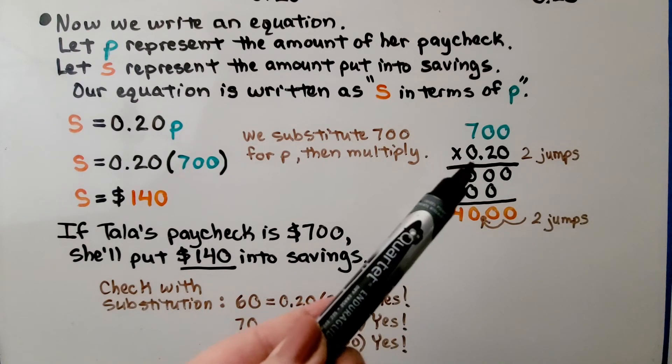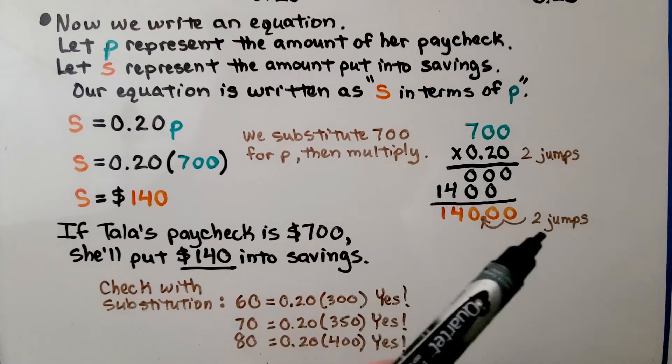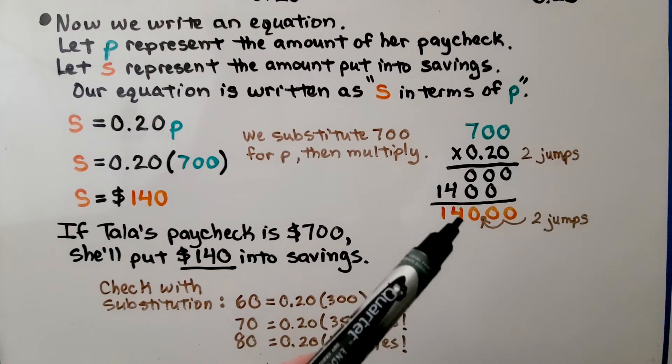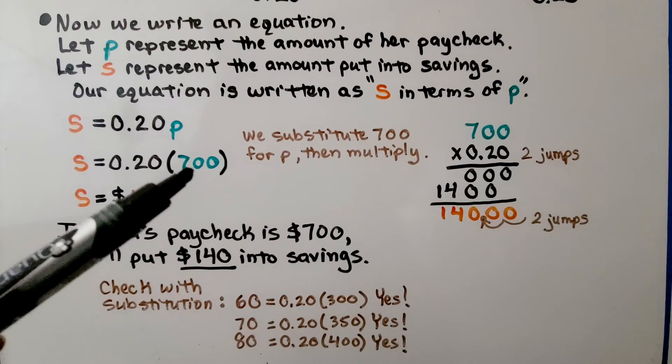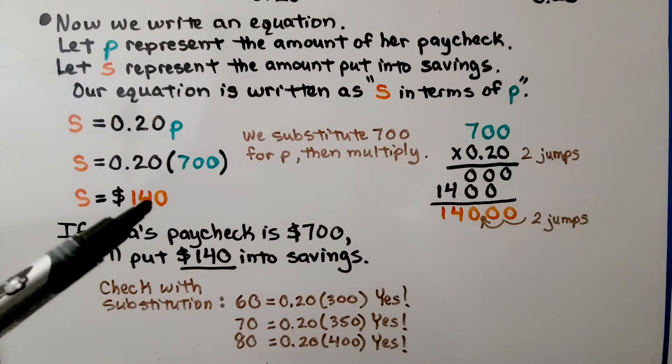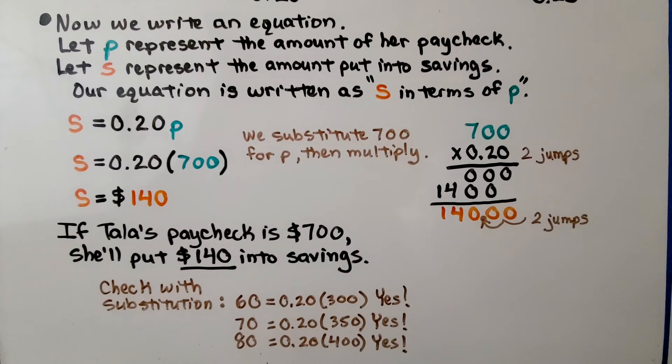700 times 0.20. We have two jumps in the multiplication problem, so there's going to be two jumps in the product. We get $140. So we know if she gets a paycheck of $700, she's going to put $140 into savings. And we can check the other values with substitution. We can put in the 300, the 350, the 400 to see if they multiply by 0.20 to equal those values for the savings. And yes, they do, so we know we did it correctly.